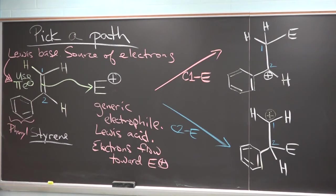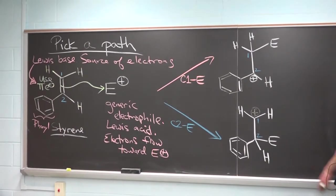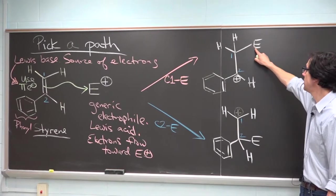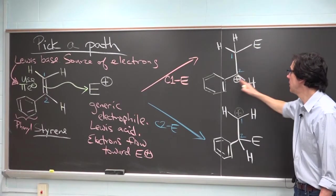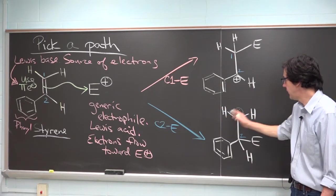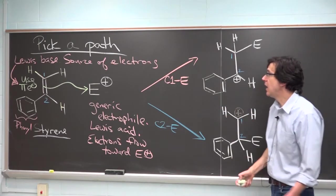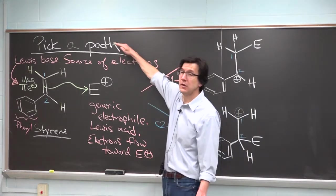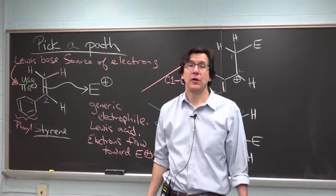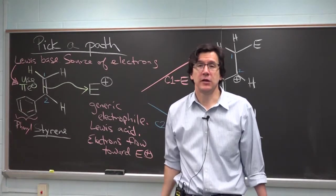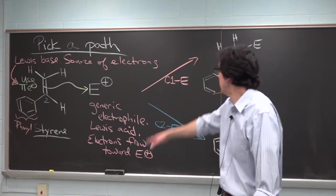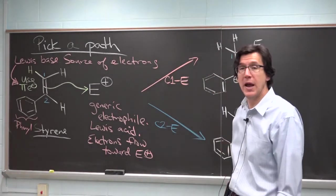We've looked down each of these two paths. One path, the one where we make a bond between carbon 1 and E, is here. The one where we make a bond between carbon 2 and E is here. Now your job is pick one as the better one. And by better, we mean, energetically speaking, look at the consequences of doing this the pink way versus doing this the blue way.